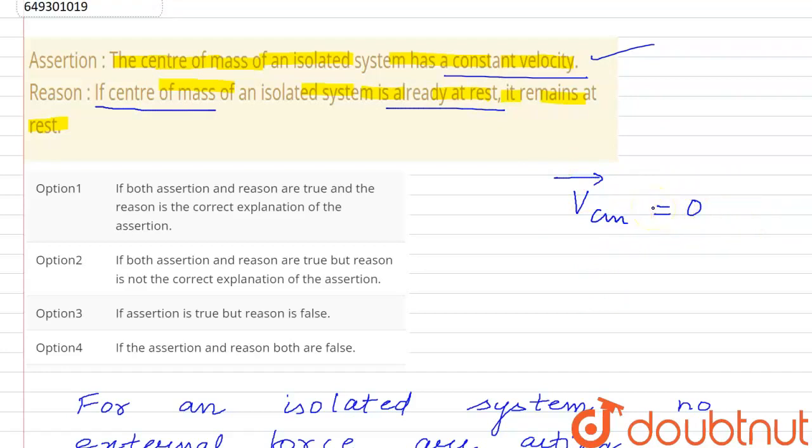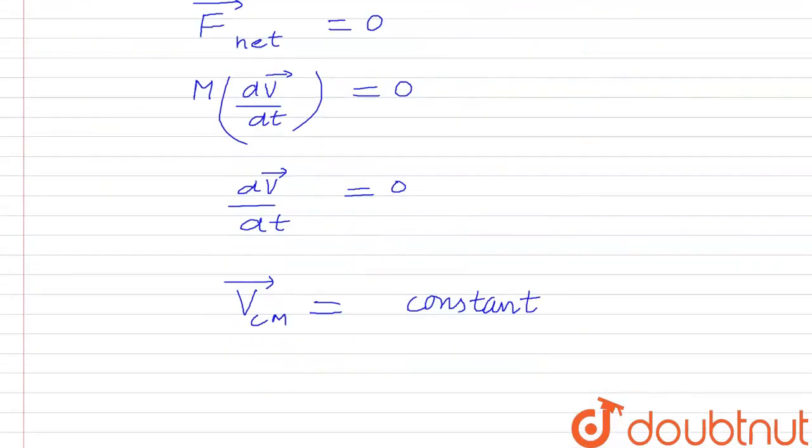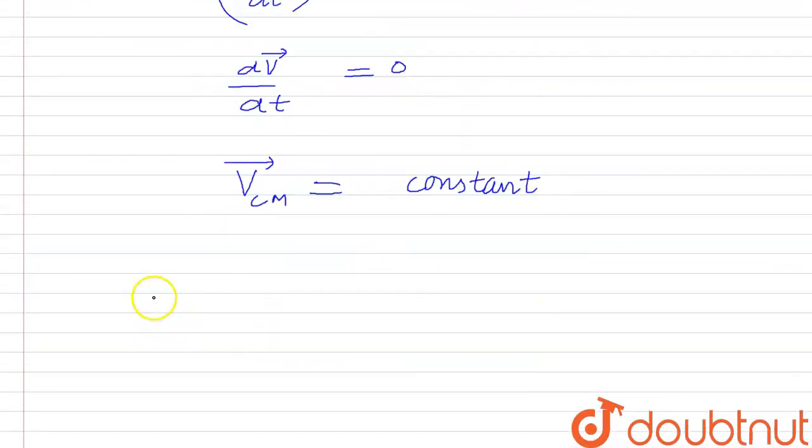However, the reason is not explaining the assertion correctly. We can go with option 2: both assertion and reason are true, but reason is not the correct explanation of the assertion. Option 2 is the correct answer.